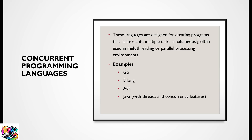Concurrent programming languages are designed for creating programs that execute multiple tasks simultaneously, often used in multi-threading or parallel processing environments. Examples of such programming languages are Go, Erlang, Ada, and Java.